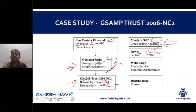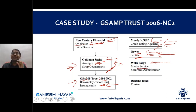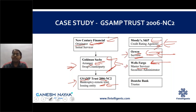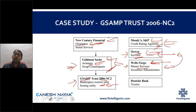This subsidiary entity was used to issue and sell MBS to investors. Moody's and S&P were involved in rating. Ocwen was the servicer handling EMI collection, accounting, reconciliation, and back-office activities. Wells Fargo was the master servicer — since Goldman Sachs was involved in hundreds of securitizations, they had an agreement with Wells Fargo to act as master servicer across all of them, with Ocwen acting as sub-servicer for this specific deal.